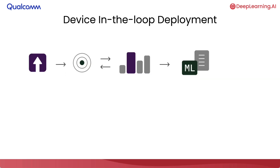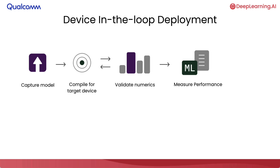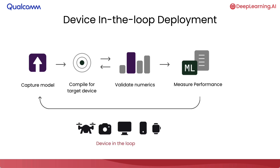In this lesson, we're going to walk through a new way to deploy models on-device that makes it extremely easy to take a model that you've trained in the cloud and make it work on the device within about five minutes. There are four main steps as part of this process. First, you will capture the model as a computational graph. Then you will compile that computational graph for your target device. You will then validate the numerics of that model on the device you're trying to deploy to. And finally, you will measure performance on the device. All of this requires an actual device in the loop.